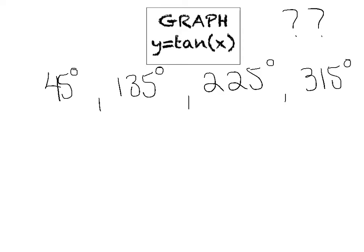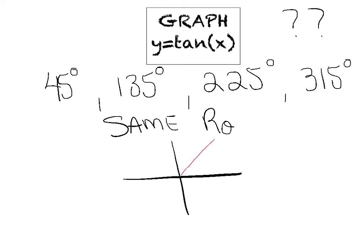Hopefully you're screaming the answer — they all have the same reference angle, which I'll call sub-theta. Just to convince yourself: 45° splits the first quadrant in half; 135° is in the second quadrant with a distance of 45° to the x-axis; 225° is in the third quadrant with a 45° distance; and 315° splits the fourth quadrant in half. The reference angle is the degrees of separation between the terminal ray and the nearest x-axis. So how does that help us today?